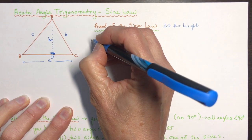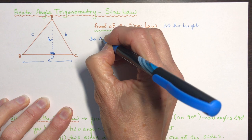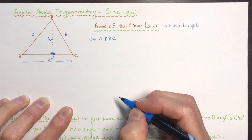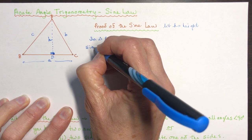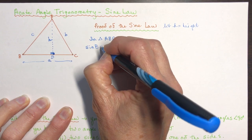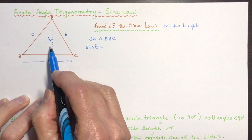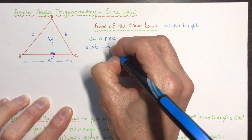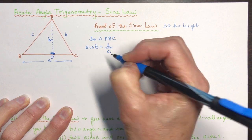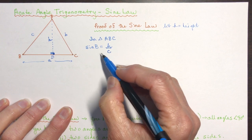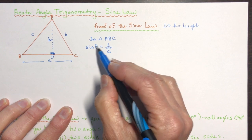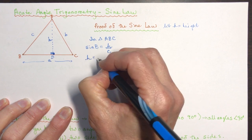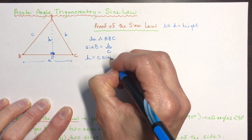If I look at triangle ABD and ask what the sine of B would be — sine is opposite over hypotenuse — that would be H over c. And if I asked how you could represent the height in terms of this, the height is c times the sine of B. So H = c·sin(B).